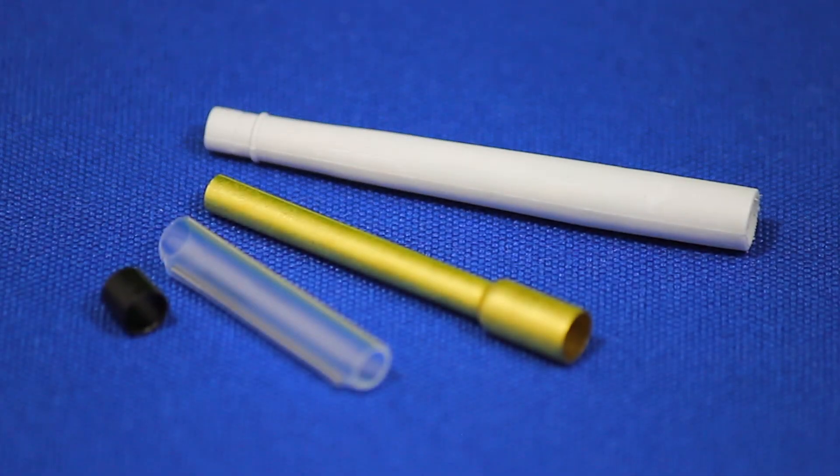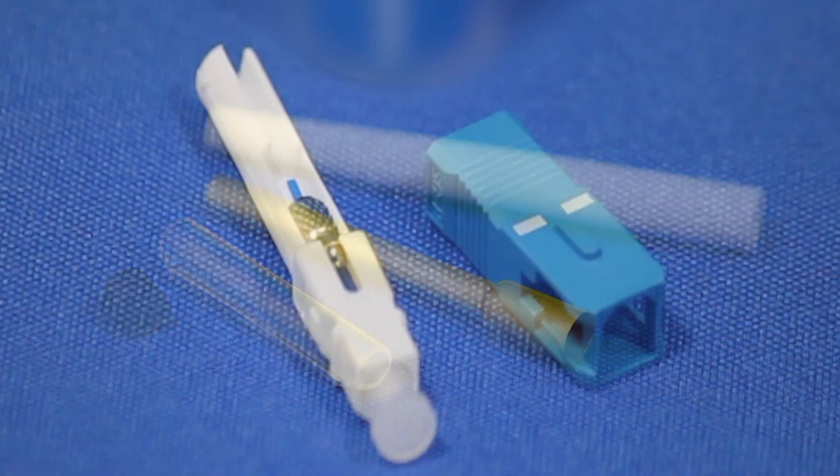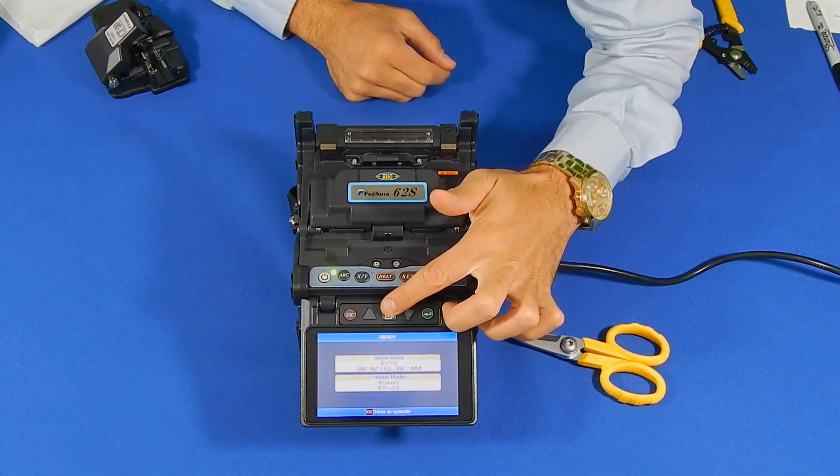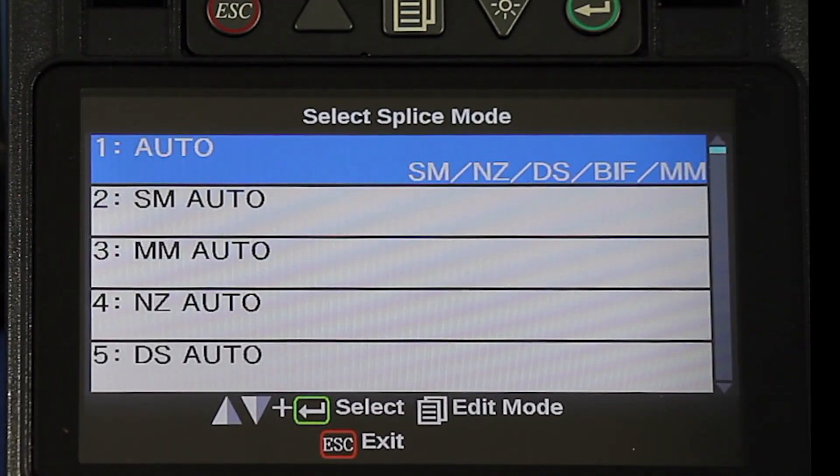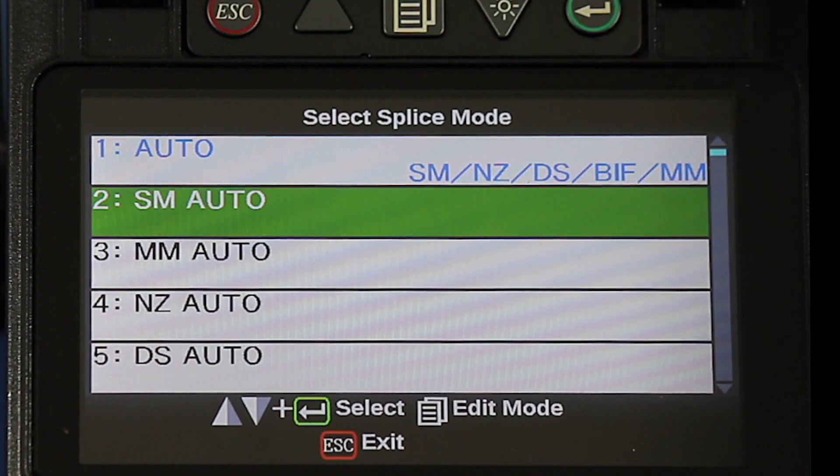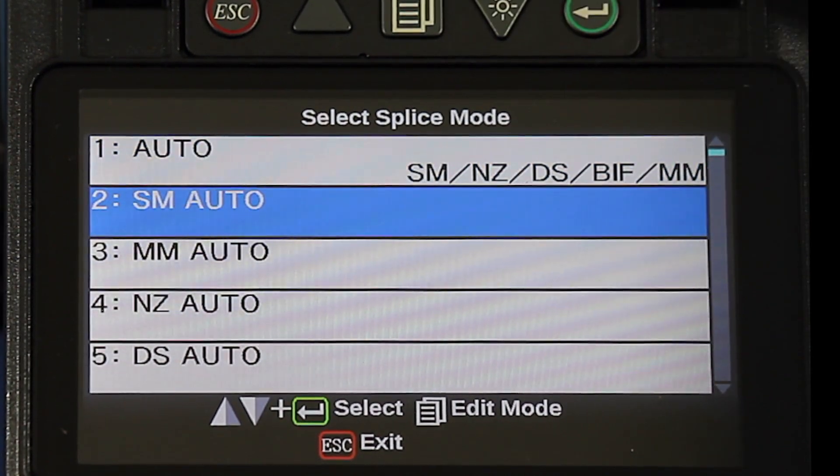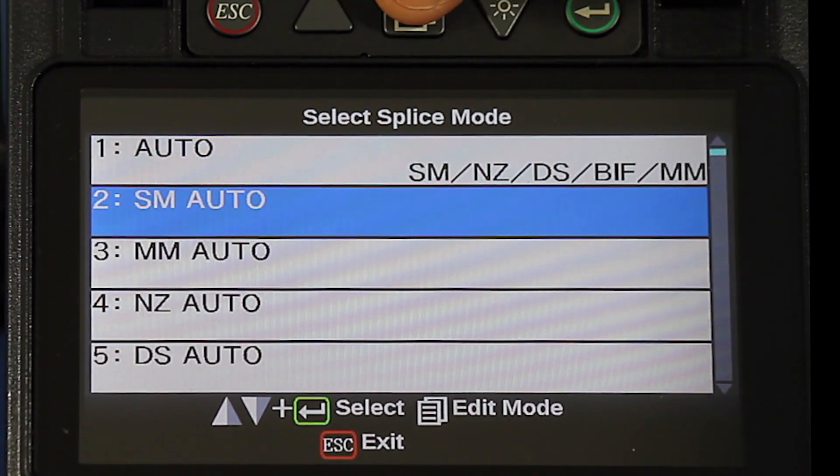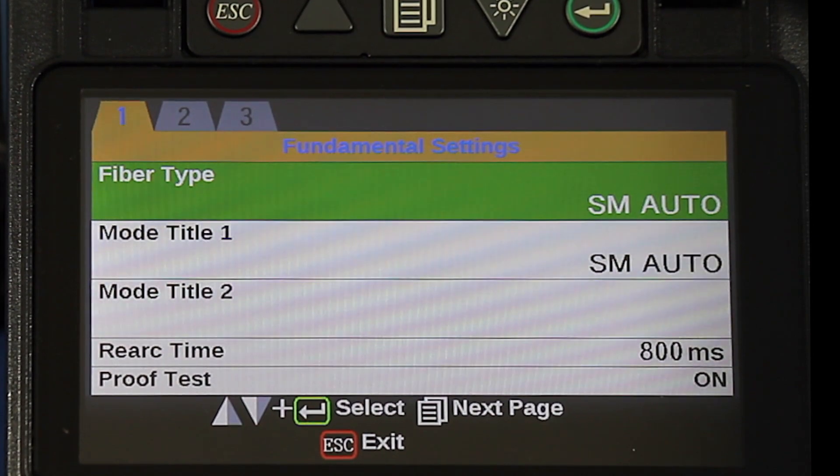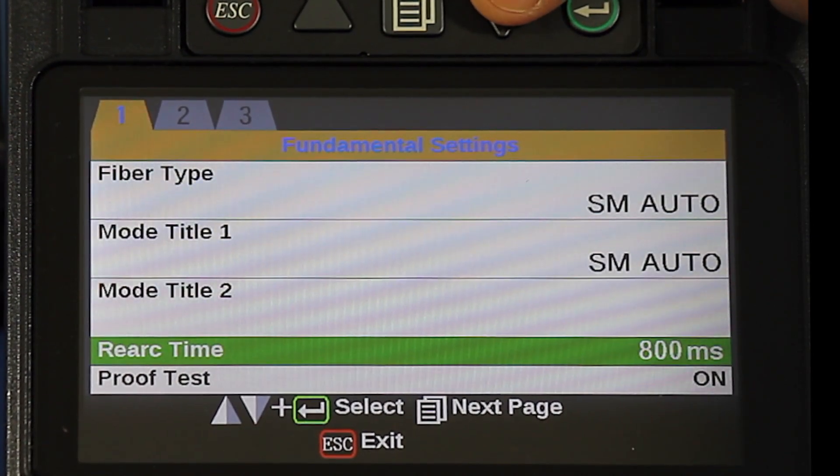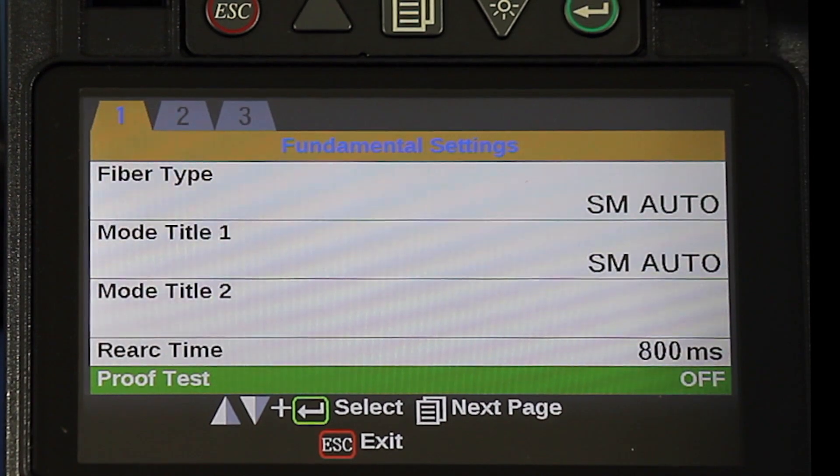Now, let's set up the machine to splice the Armadillo 3mm splice-on connector. First, let's select our fiber type. Press the menu key, select splice mode, select single mode auto. Once selected, press edit mode button. Scroll down to proof test and press the select button to turn off.